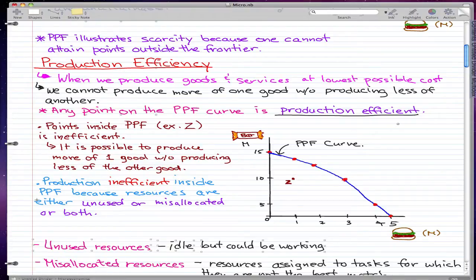So that's when it's production inefficient. Production is inefficient at points inside the PPF. We are giving up more than necessary of one good to produce a given quantity of the other good. At such a point, it is possible to produce more of one good without producing less of the other good.